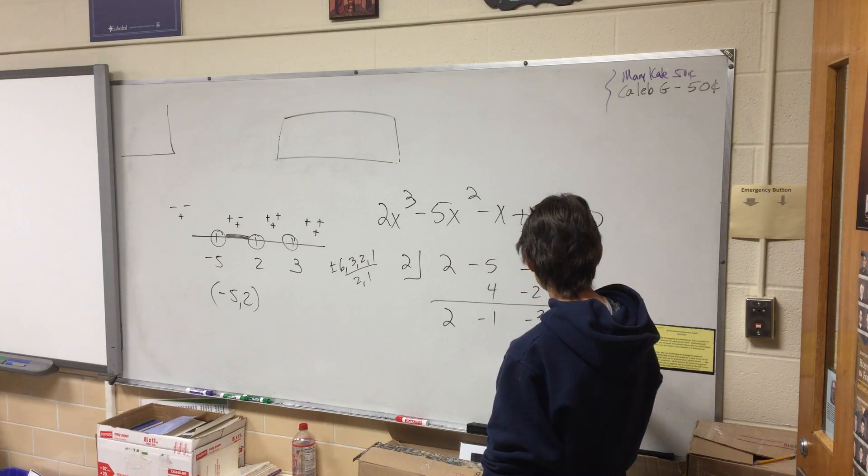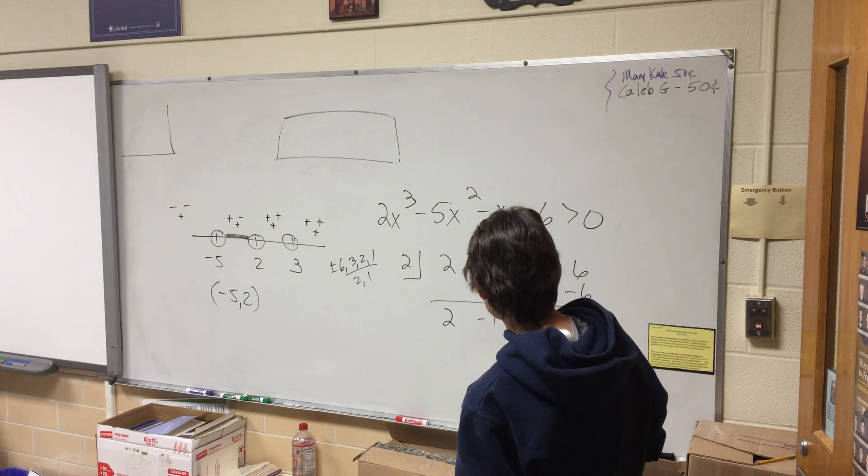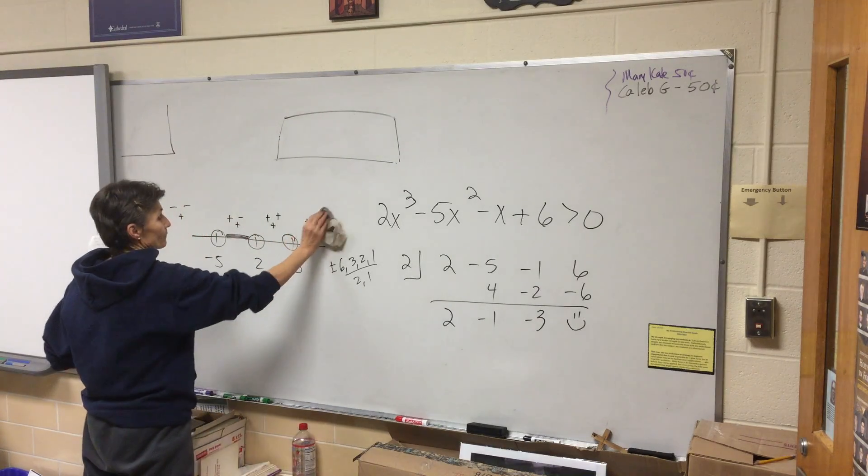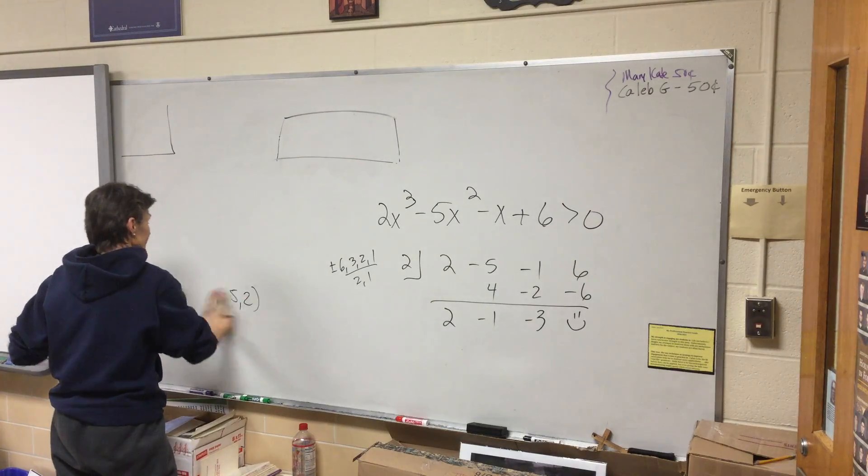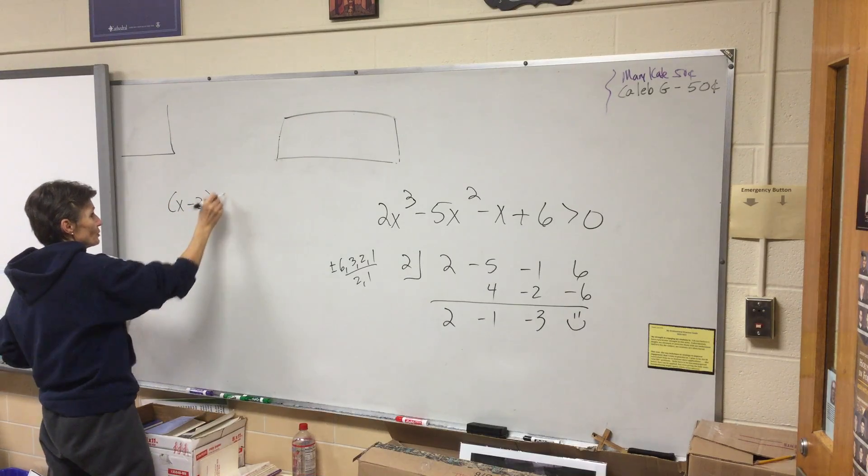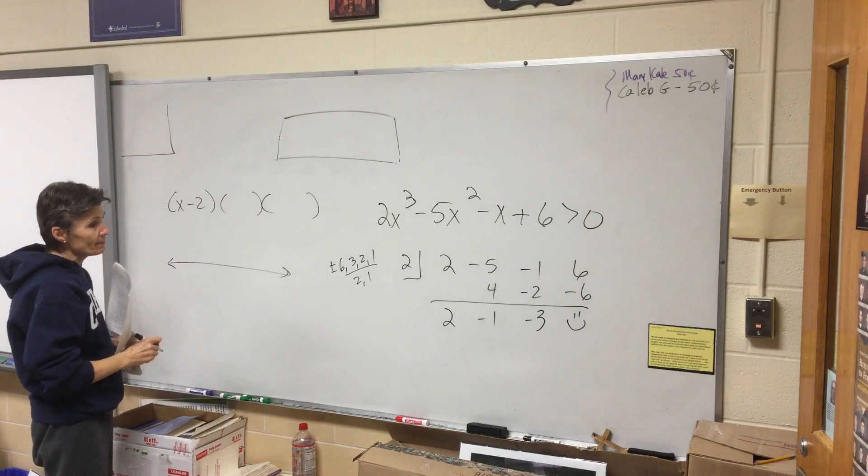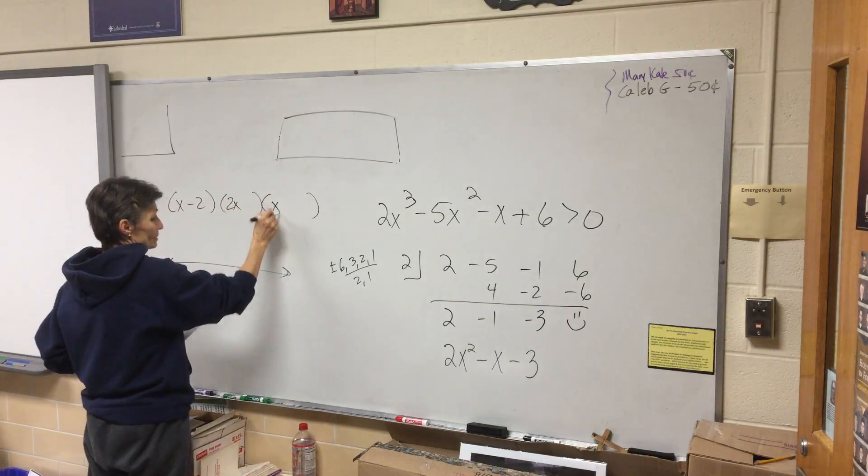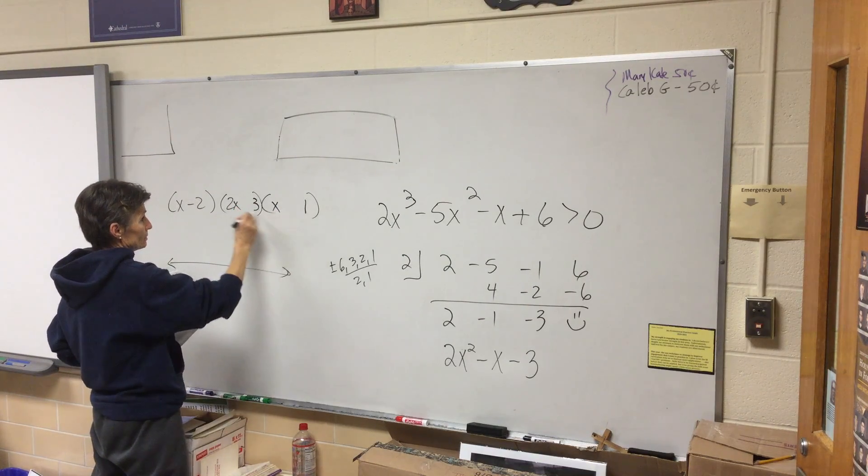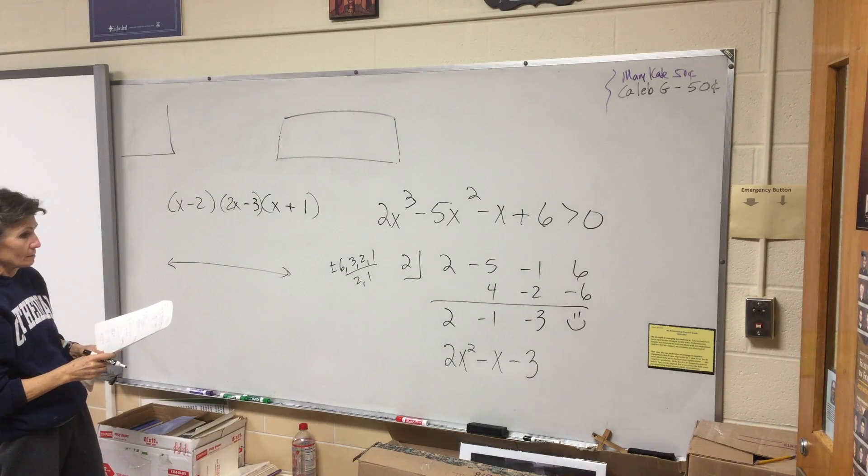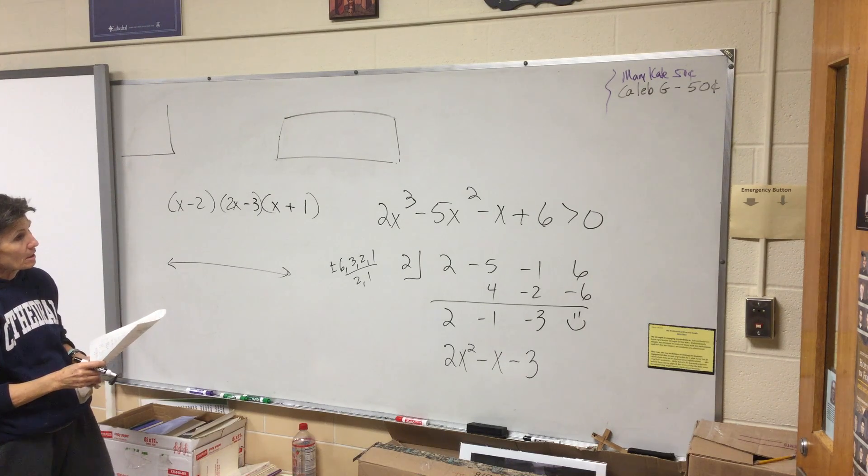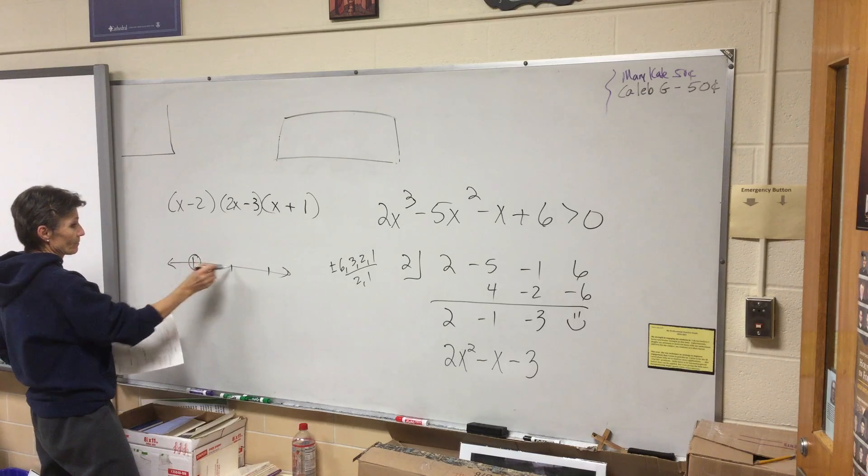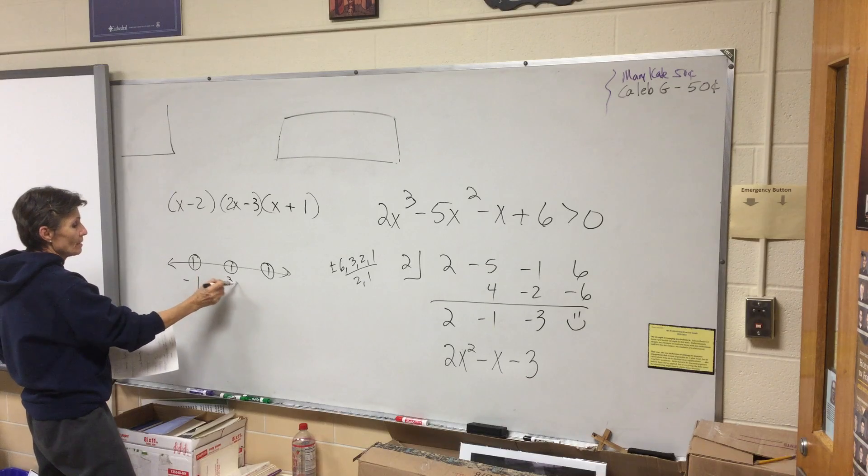I think two works. That is great news. So two works, I have a factor of x minus two. I'll put that on my number line in a minute. And what are my other factors going to be? So it looks like my dots are going to be at negative one, three-halves, and two.